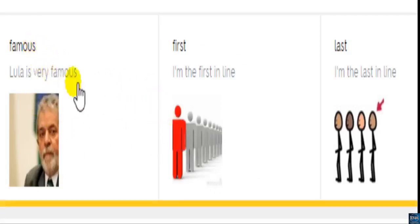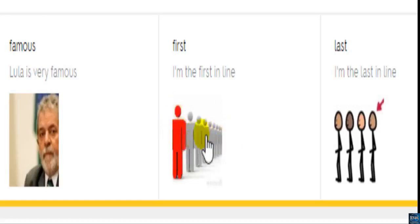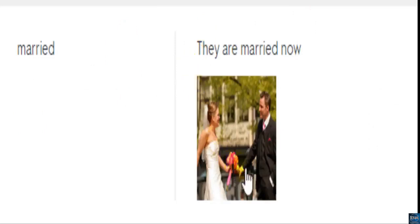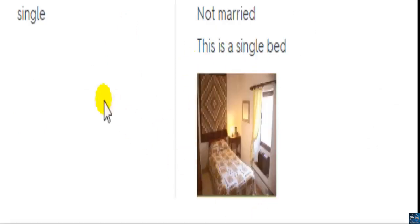Famous. First — I am the first in the line. Opposite: last — I am the last in line. Married — they are married now. Single — not married. This is a single bit.